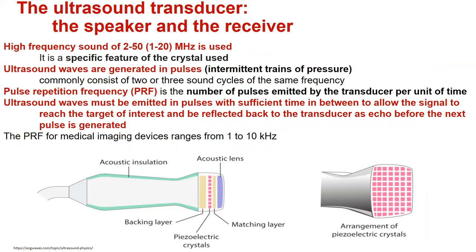The ultrasound transducer can function as both a speaker and a receiver. The specific crystal used in the transducer creates sound waves with frequencies of 2 to 50 MHz. Ultrasound waves are generated in pulses, and pulse repetition frequency is the number of pulses emitted by the transducer per unit of time. Ultrasound waves must be emitted in pulses with sufficient time in between to allow the signal to reach the target and be reflected back to the transducer as an echo before the next pulse is generated.